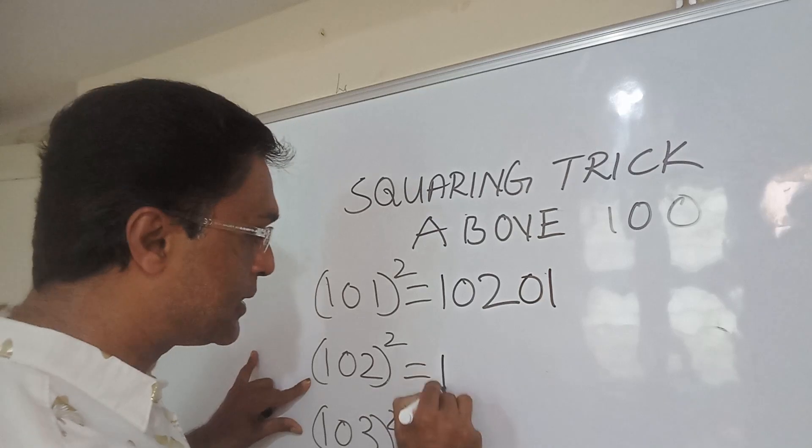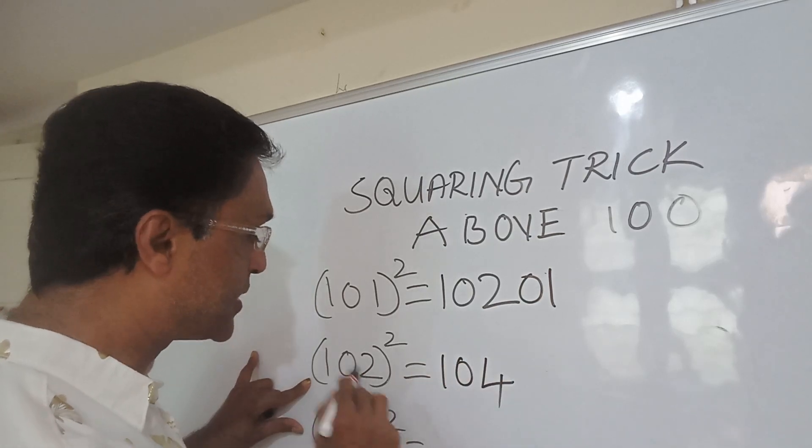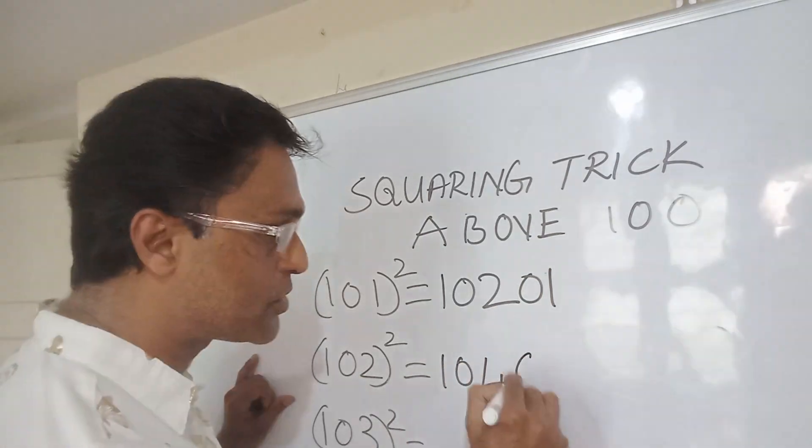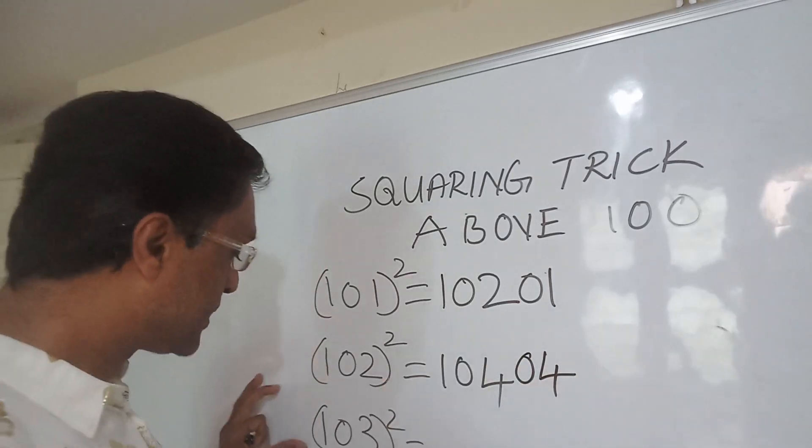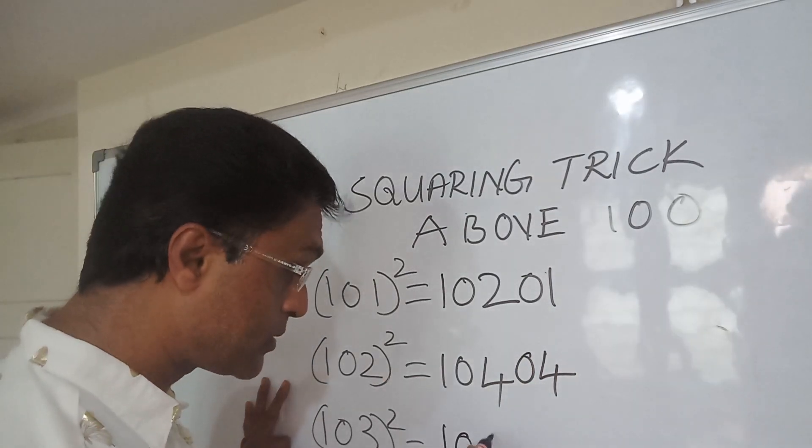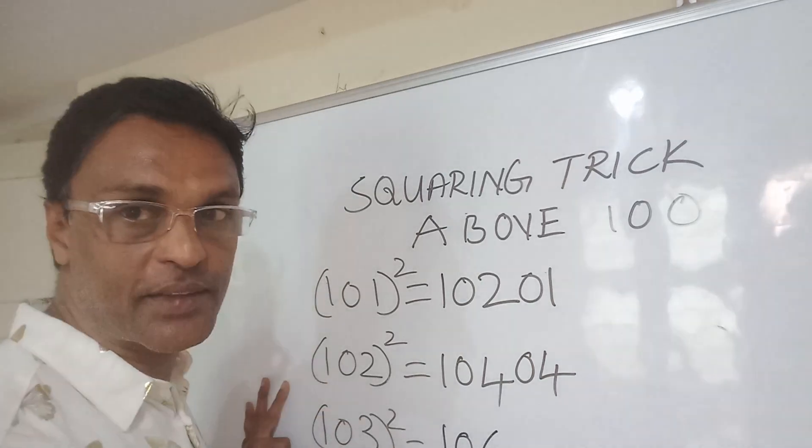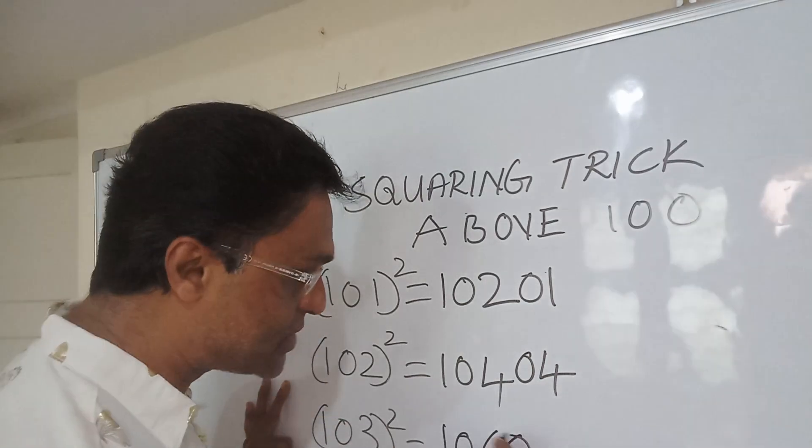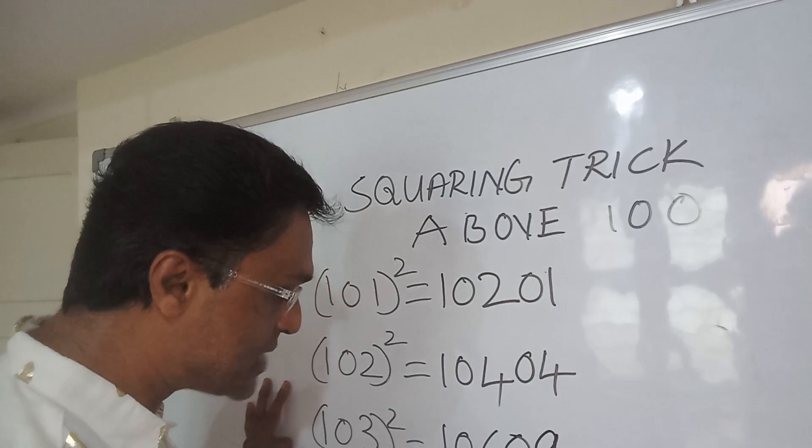102 plus 2 is 104. The last number, 2 squared, is 04. That's all, 10404. Take 103, plus 3 is 106. And the last number squared, 3 squared, is 09. Tell me the answer for this one, 10609.